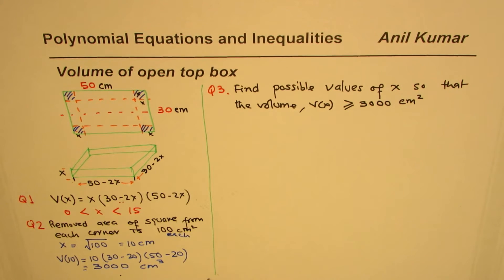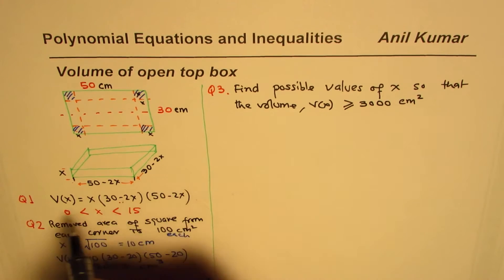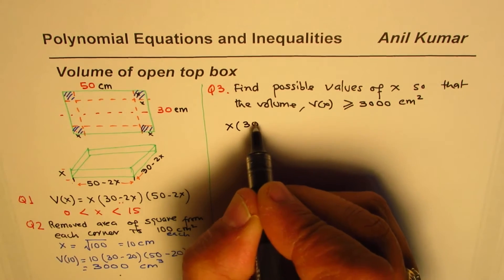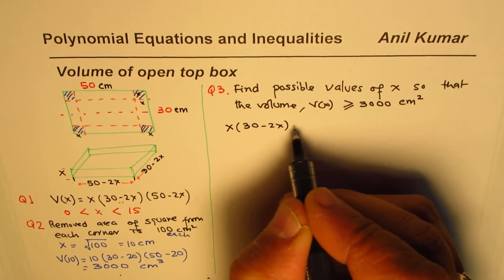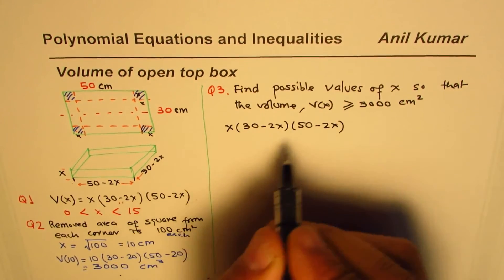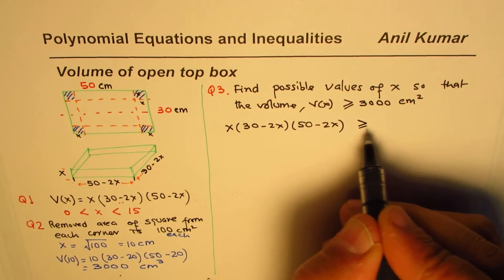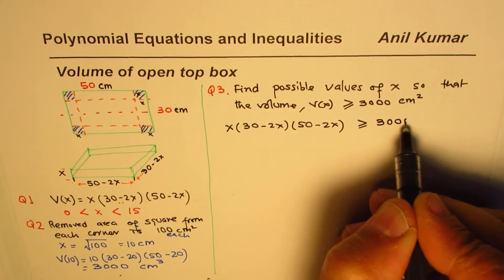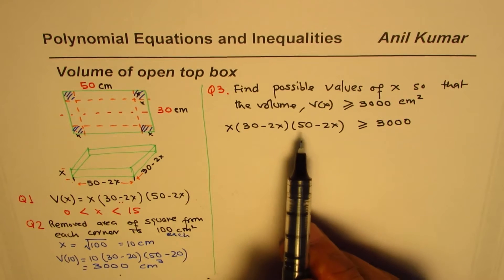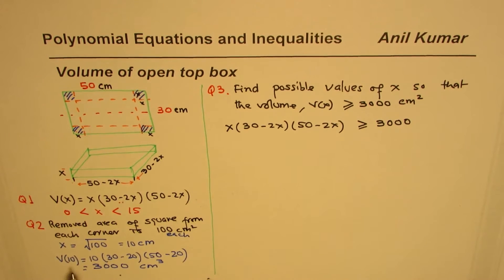Our expression is V(x) = x · (30 − 2x) · (50 − 2x) and this time the volume must be greater than or equal to 3000. We already know it equals 3000 when x = 10.